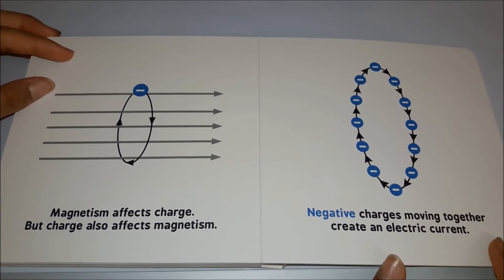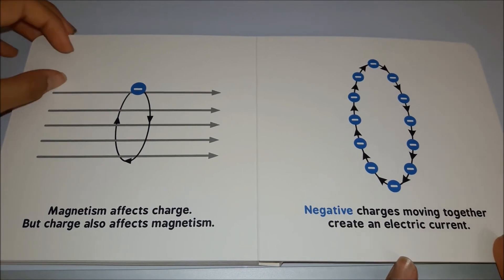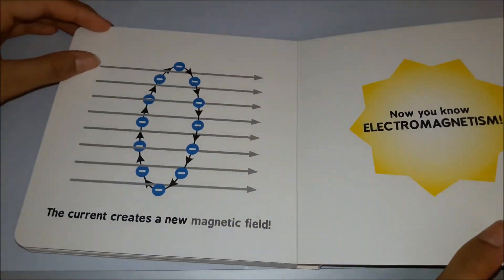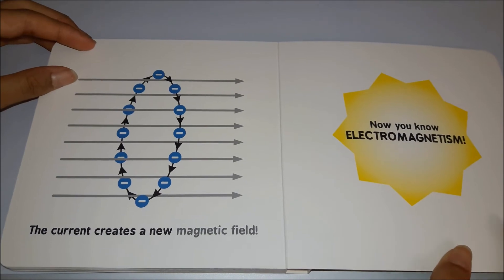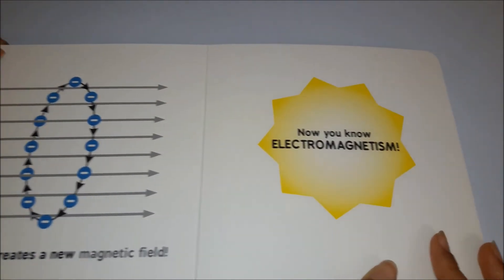Negative charges moving together create an electric current. The current creates a new magnetic field. Now you know about electromagnetism.